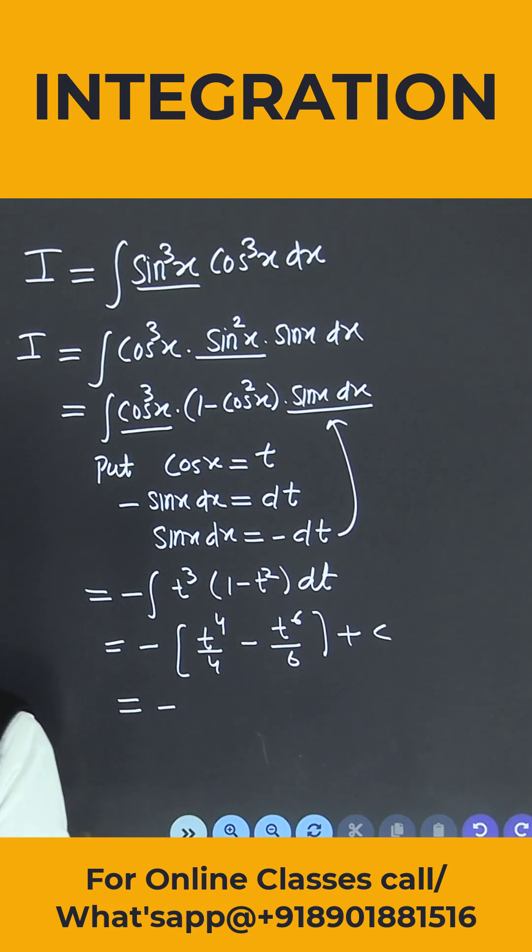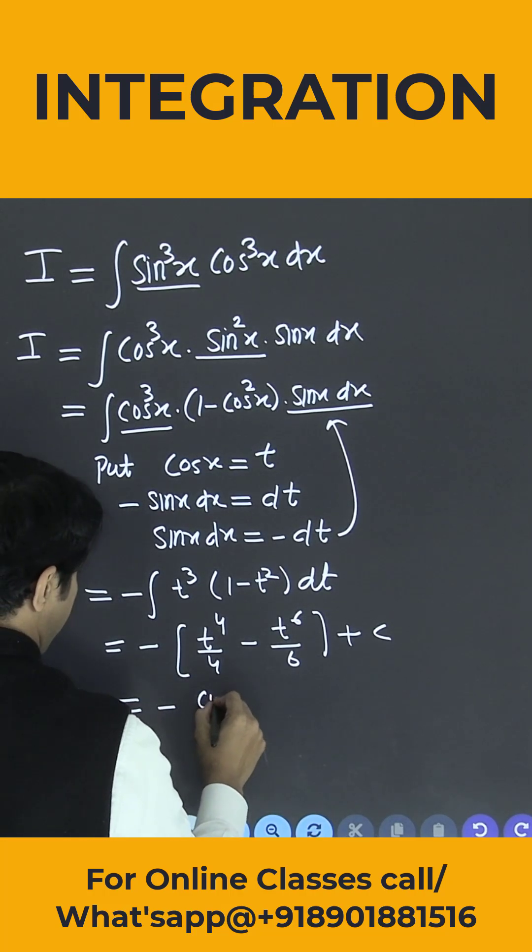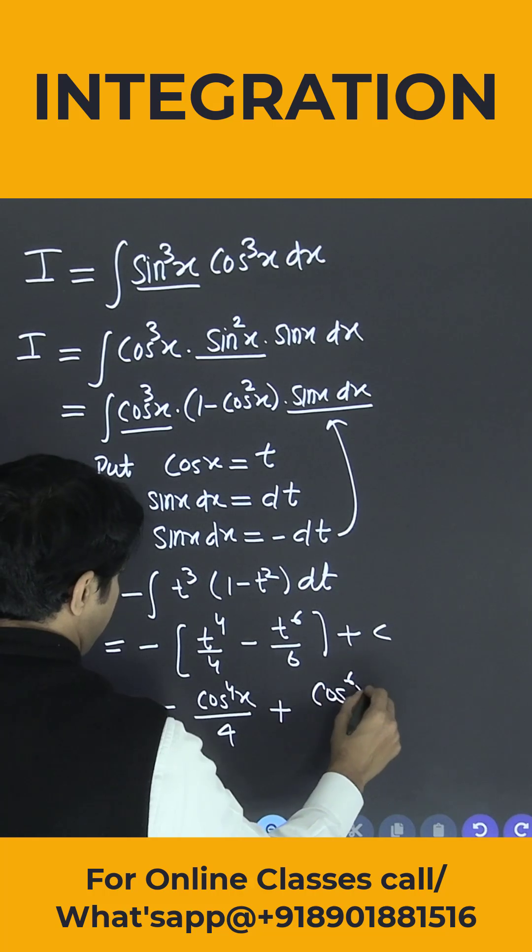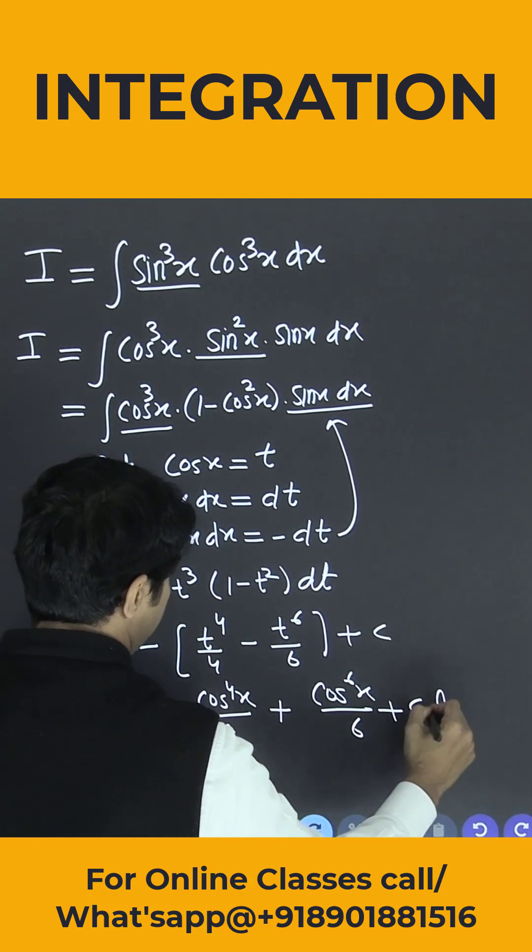So this is minus. What is the value of small t? This is cos x. So cos to the power 4x divided by 4 plus this is cos to the power 6x divided by 6 plus c is the answer.